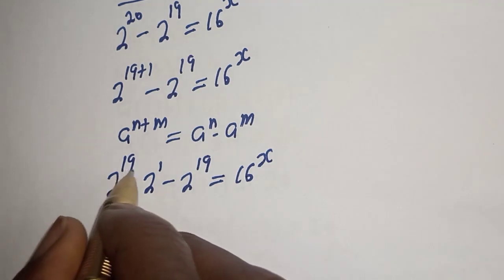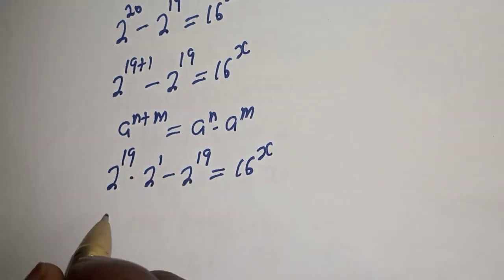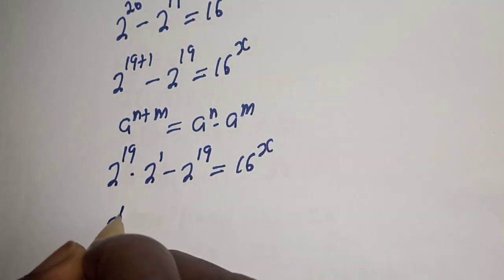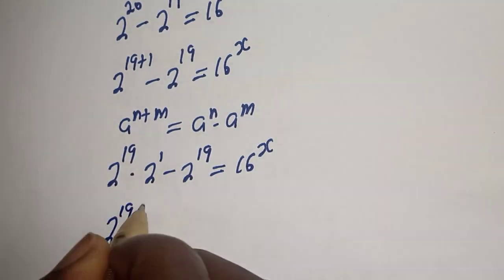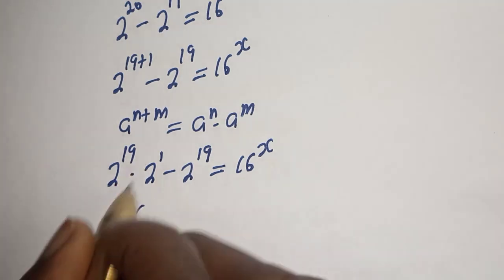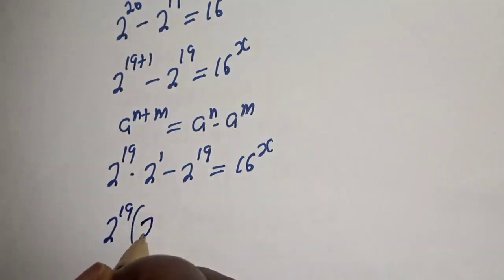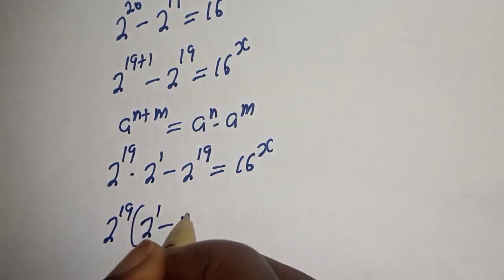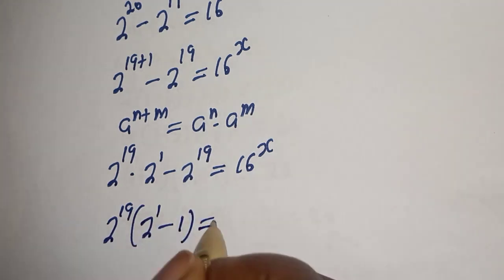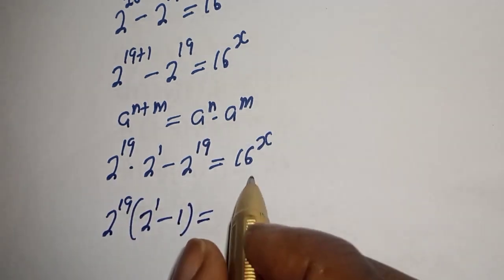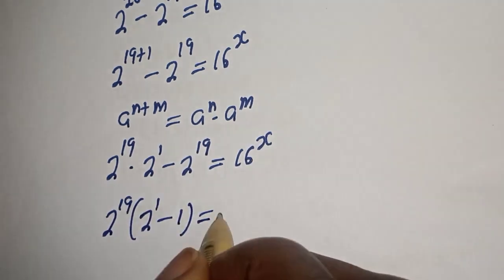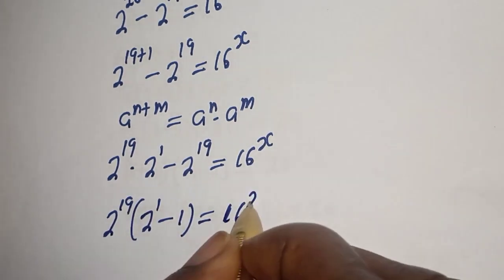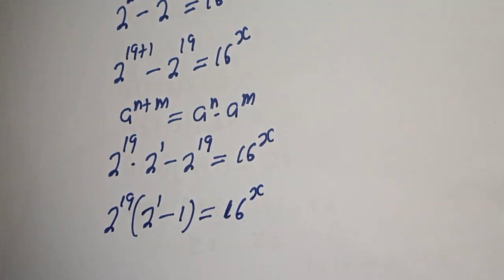Now, 2 raised to power 19 is common. Let's bring it out: 2 raised to power 19, bracket 2 raised to power 1 minus 1, is equal to 16 raised to power x.